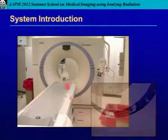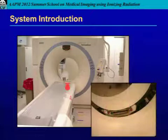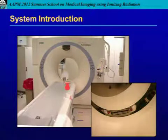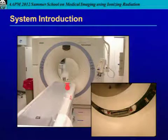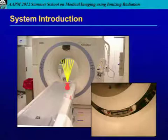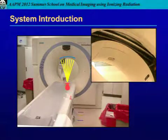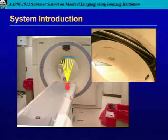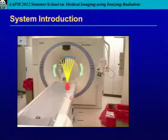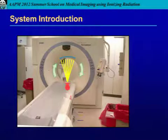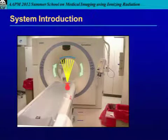Here's a CT scanner. On one side within the gantry, we have an X-ray tube — shown in the inset here; you can't actually see it because there's a protective cover. Opposing the X-ray tube, we have a set of detectors, which also have a protective cover over them. As we know, these rotate within the gantry, giving us different views and projections of our patient from different angles.